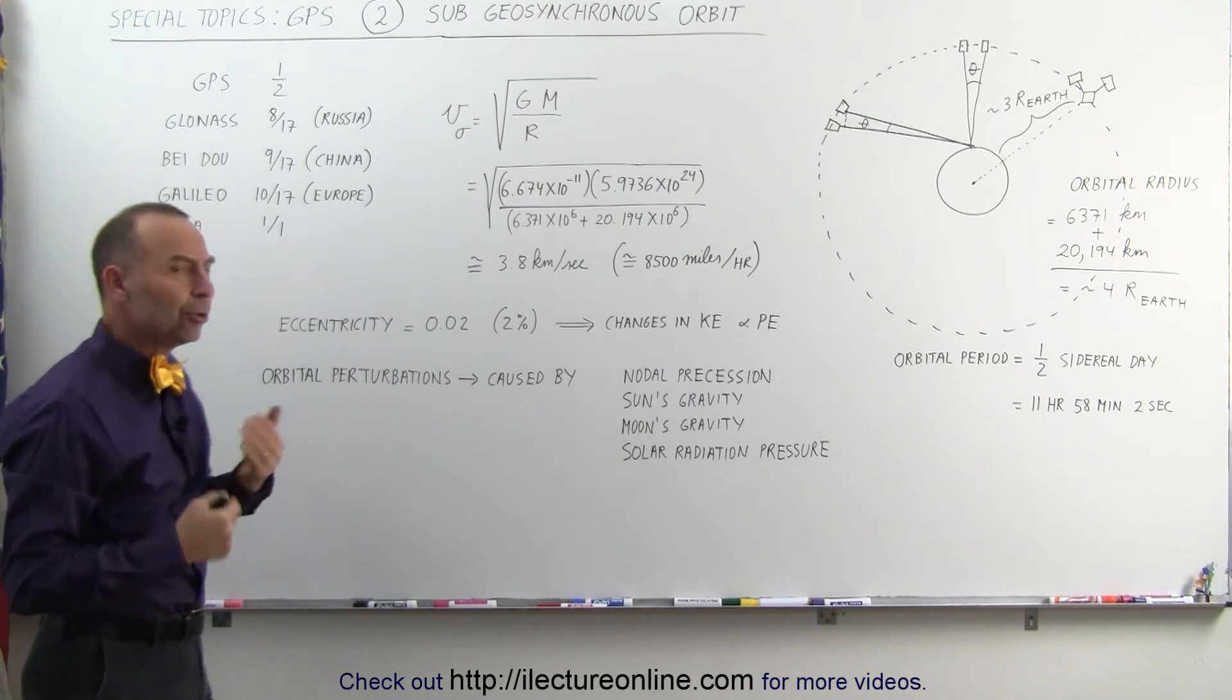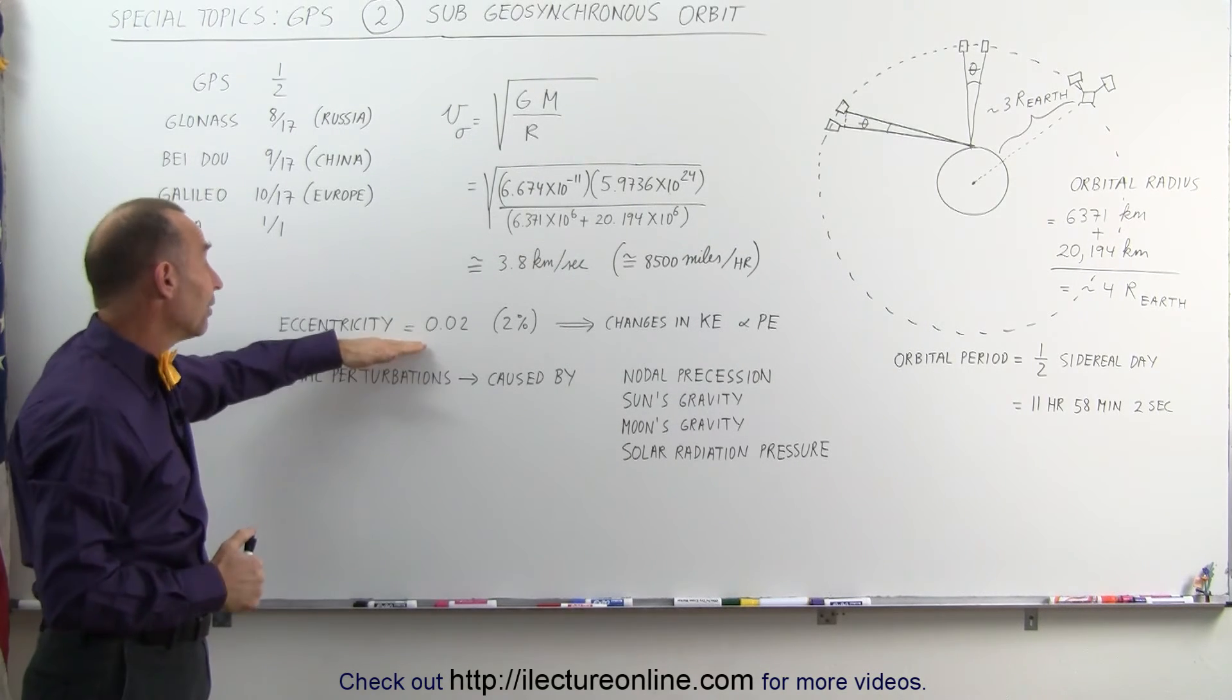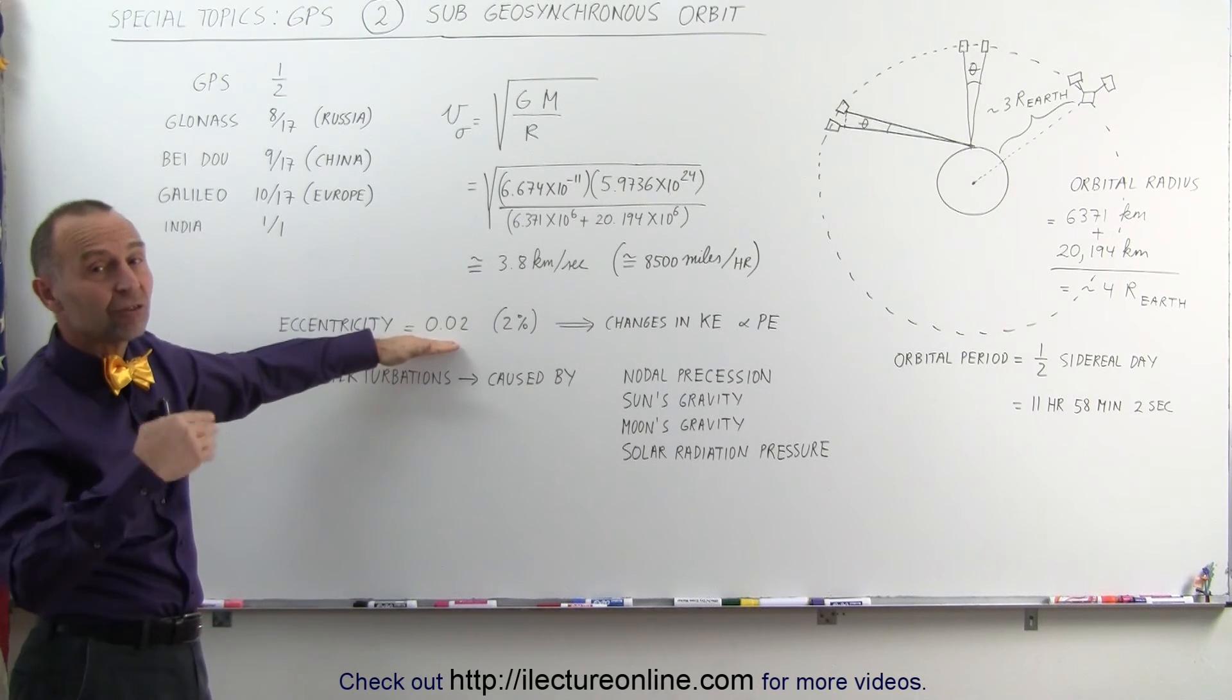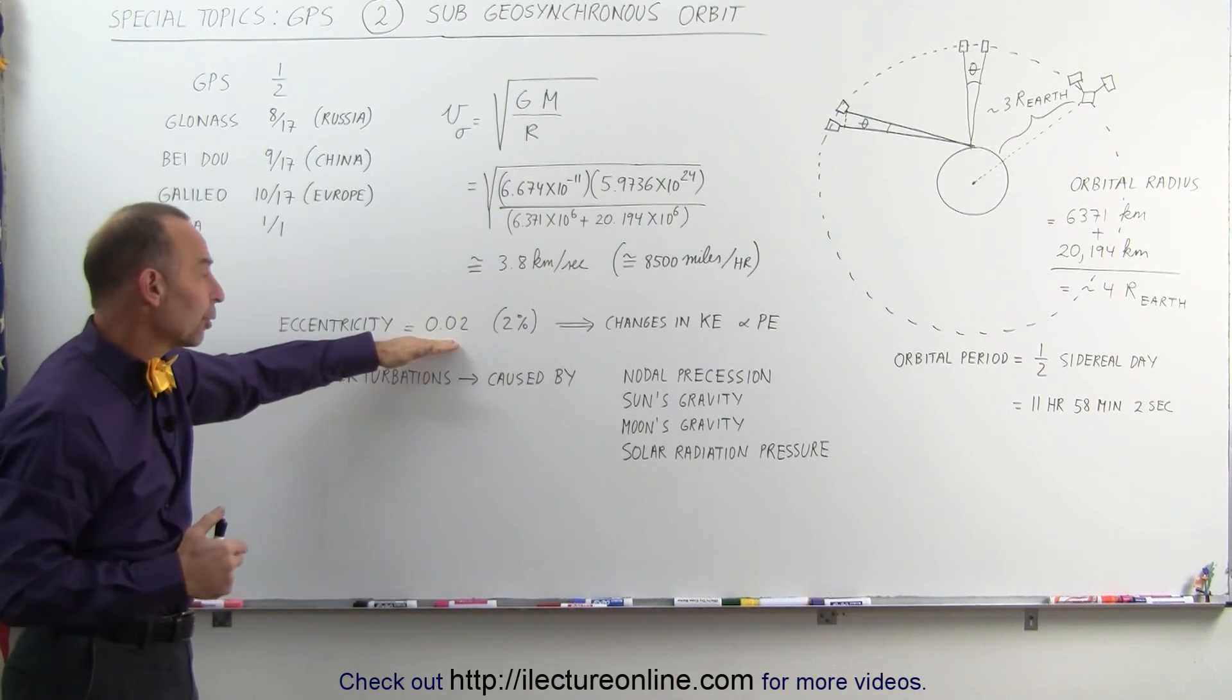Notice that the orbit is not as smooth as you would think. For one thing, of course, with the eccentricity not being equal to zero, it does speed up and slow down as it gets closer and far away from the Earth in its orbit. But there's also other orbital perturbations.